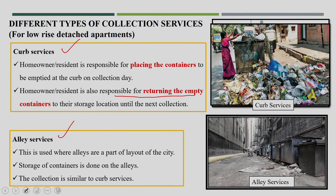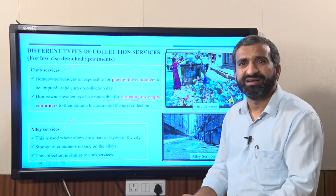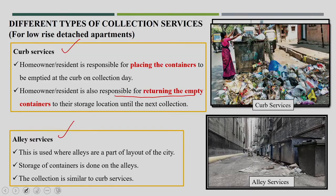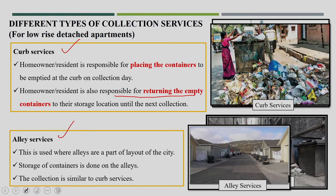In the LA service, smaller-size dustbins can be placed in different lanes where bigger vehicles cannot go, but small-size vehicles can collect from these locations. The secondary collection by small-size vehicle can easily go to the LA size. This is similar to the curb area, but the number of households served per location can be reduced in the LA service, and dustbins can be placed in different LAs.